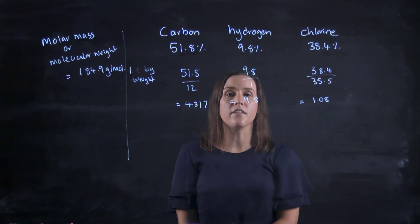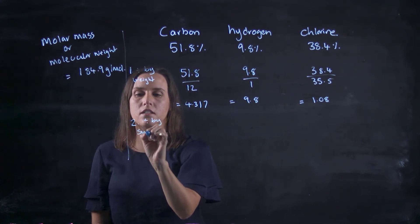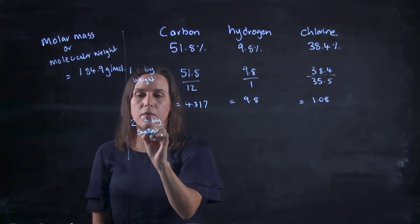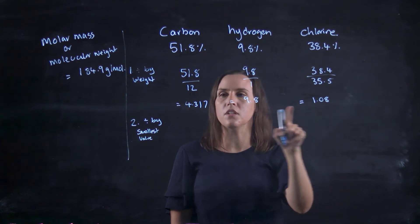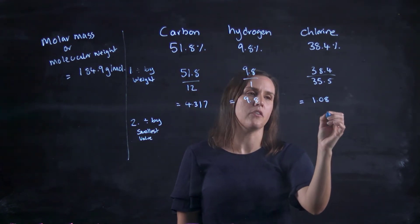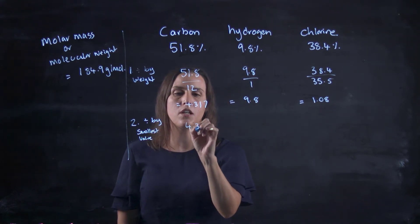So now I've got those values. The second thing is to divide by smallest number or value. So out of these, which is the smallest? So we've got 4.3, 9.8 and 1.08. So we're going to be dividing through by this one. So 4.317.